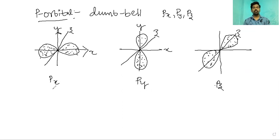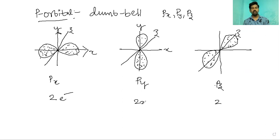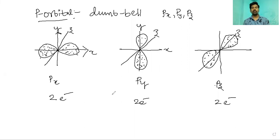So we have PX, PY, and PZ — three P orbitals in total. Each orbital can accommodate a maximum of two electrons, so the three P orbitals together hold two plus two plus two, giving a total of six electrons. P orbitals have a dumbbell shape and can accommodate a maximum of six electrons.